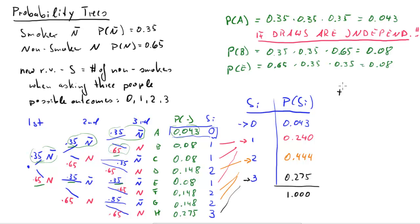Now, this sort of probability, without further explanation, is also sometimes called a binomial distribution.